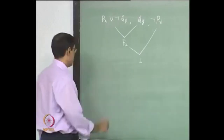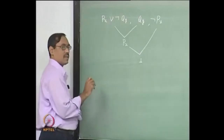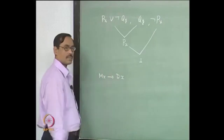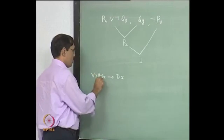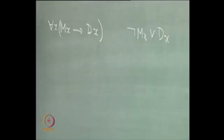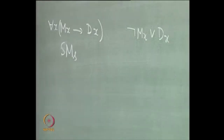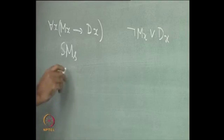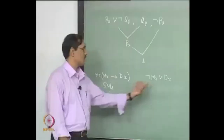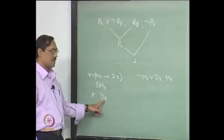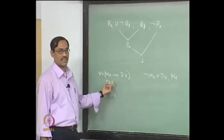Let us see another argument. For example, you have: all men are mortal. That you would write as m(x) implies d(x) for each x, which gives rise to the clause not m(x) or d(x). Then you have another: Socrates is a man, so you would write m(s) — s is a constant. From which you want to conclude that Socrates is mortal, so that will be d(x).